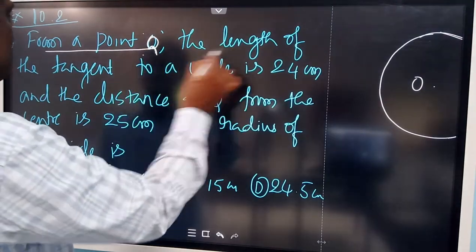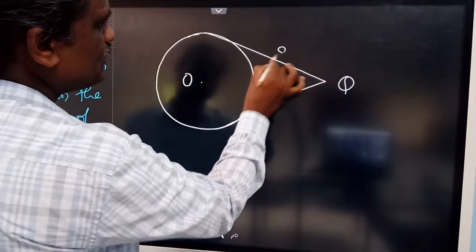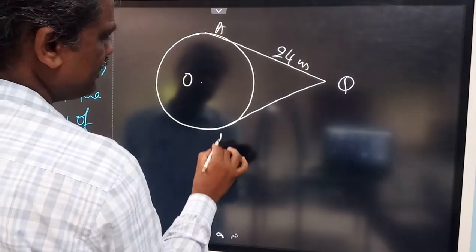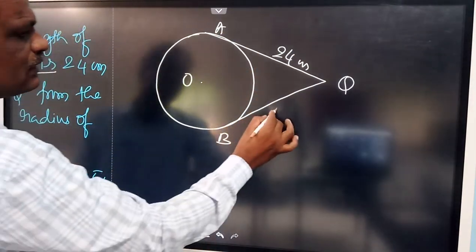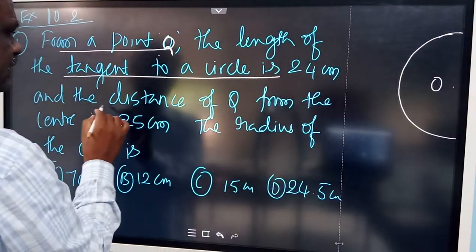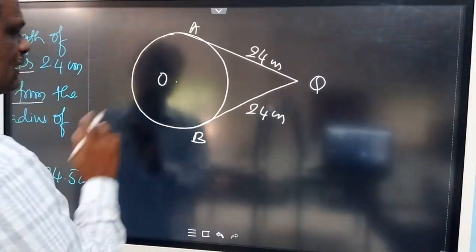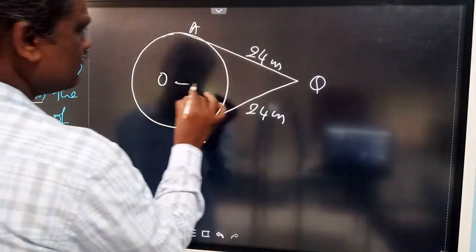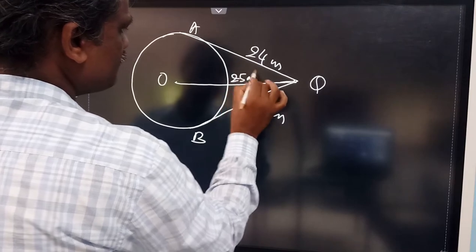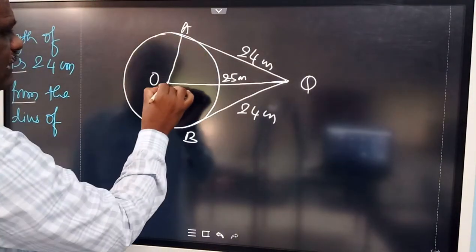The length of the tangents from point Q to the circle is 24 centimeters. Let the points of tangency be A and B, so QA = QB = 24 centimeters — tangents from an external point are always equal. The distance of Q from the center is 25 centimeters, so OQ = 25 centimeters. We need to find the radius.